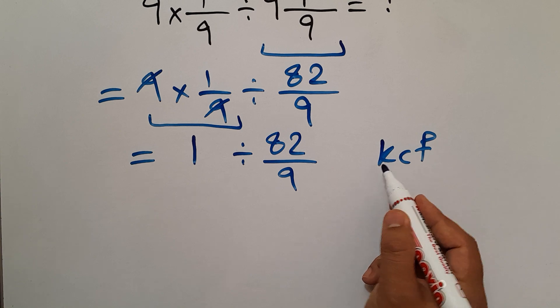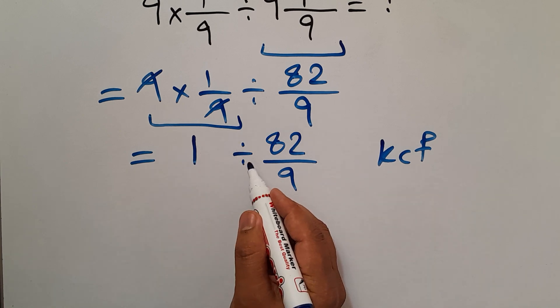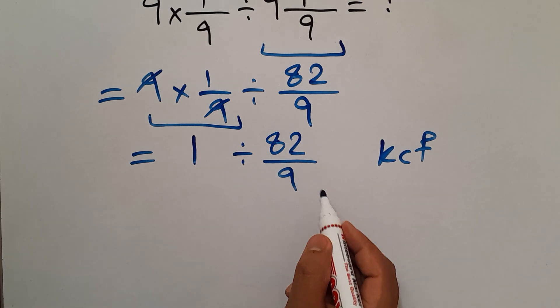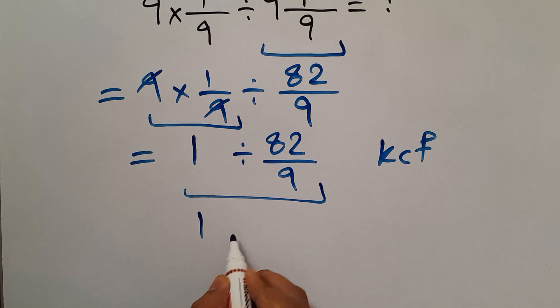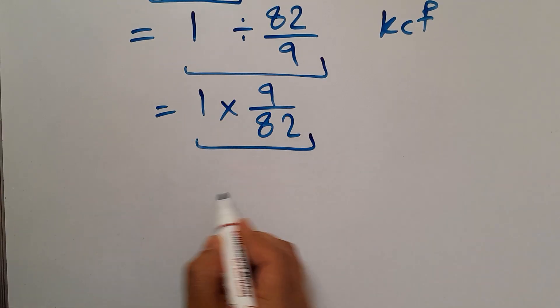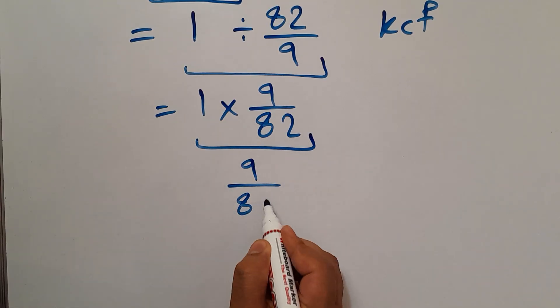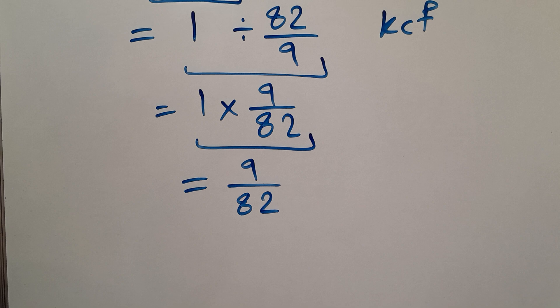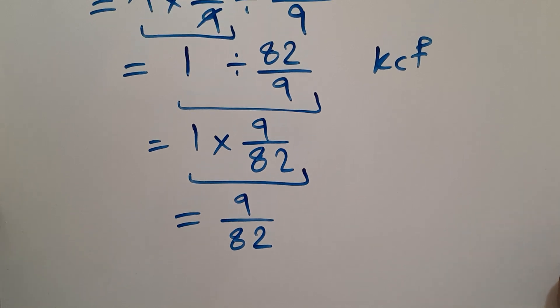We can write 1 × 9/82, and this is just 9/82. So our final answer to this problem is 9/82.